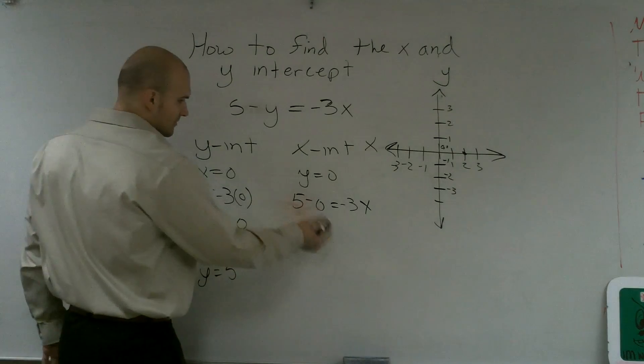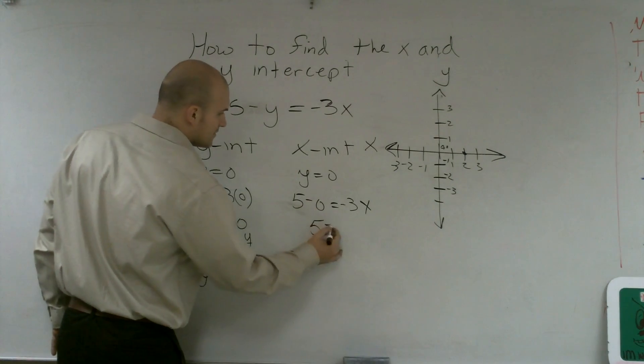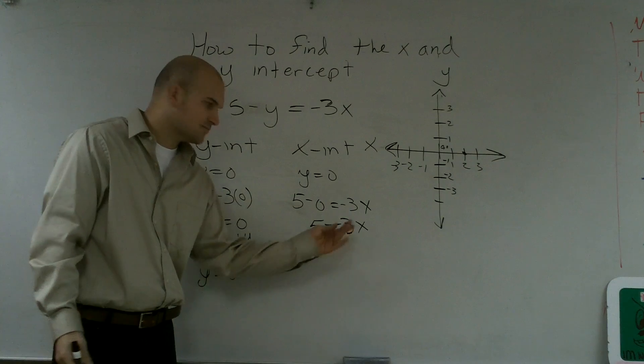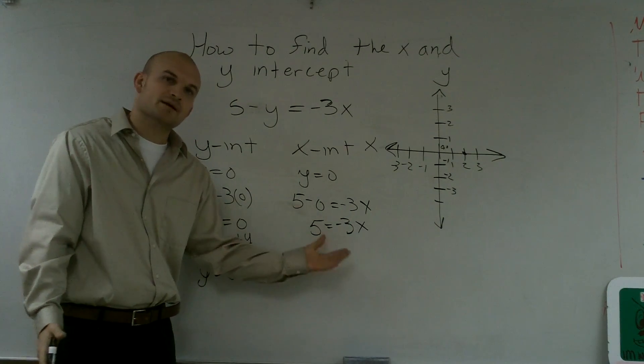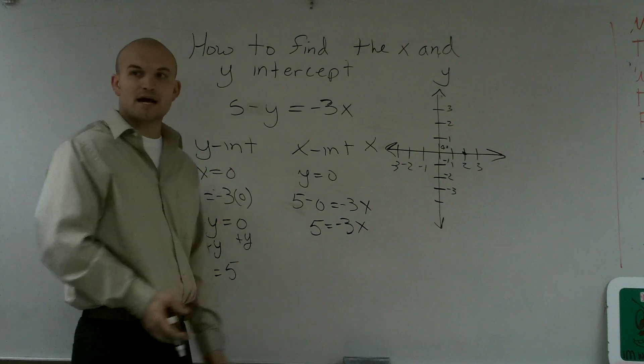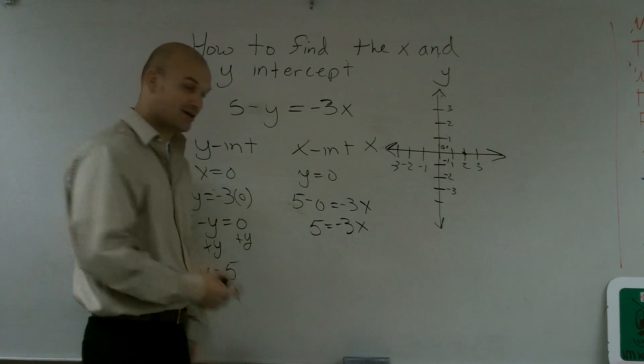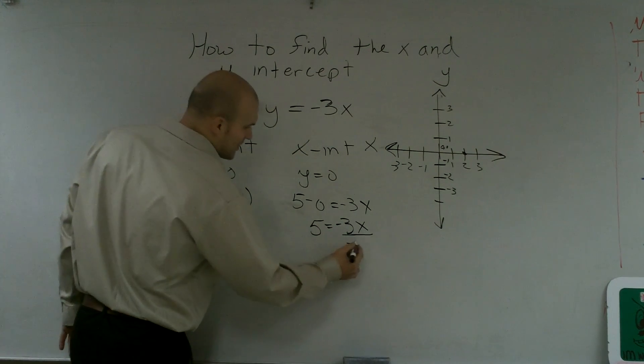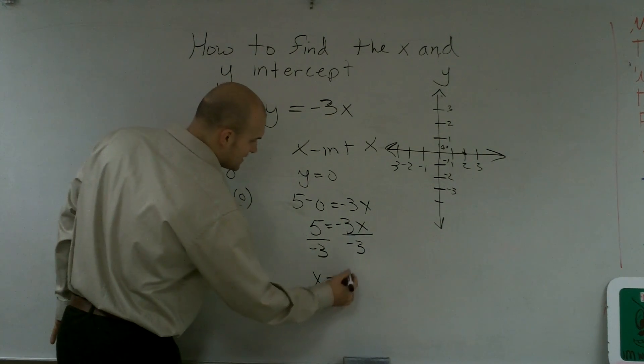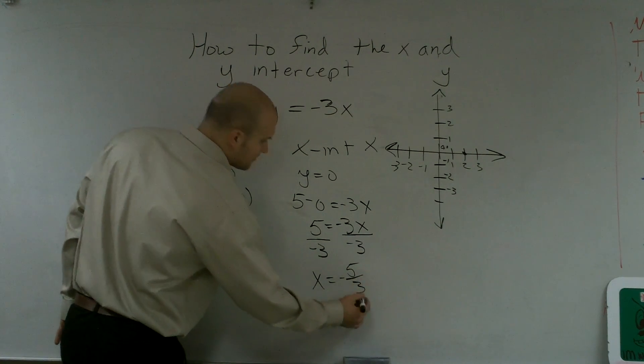Now, over here, 5 minus zero is five. Then you say, alright, well, what's happening to the x? What is happening to my variable that's prevented from being by itself? And you say, well, it's being multiplied by negative three. So I'm going to do our inverse operations, going back a couple weeks ago, a long time ago. You do the division property of equality with negative three. Therefore, x equals negative five-thirds.